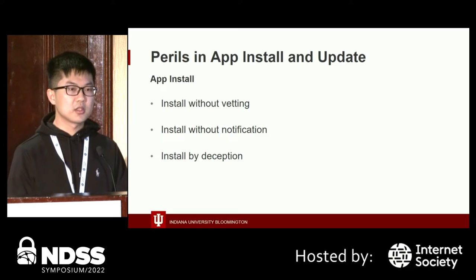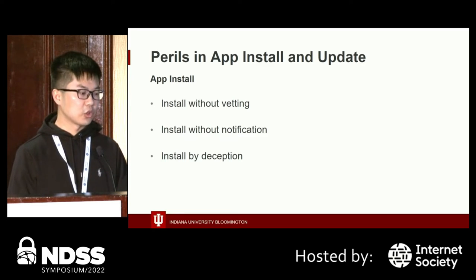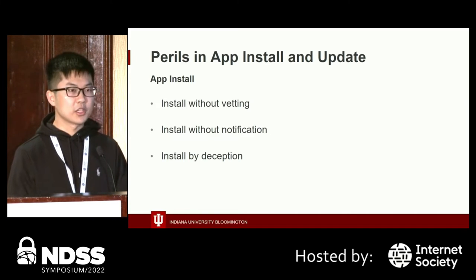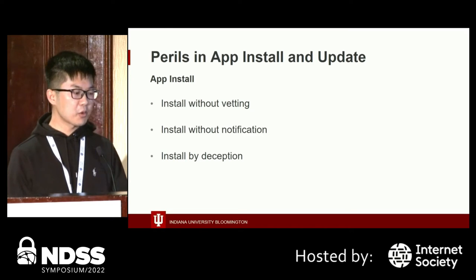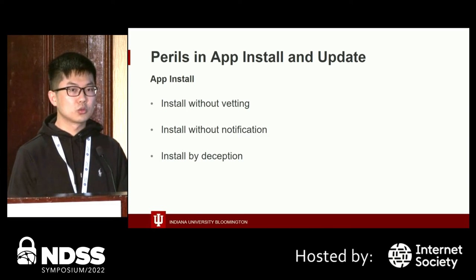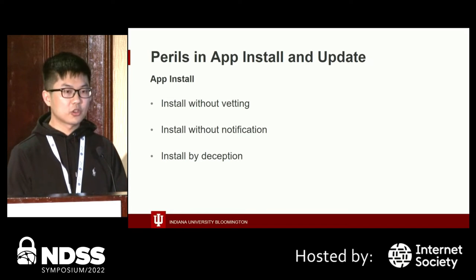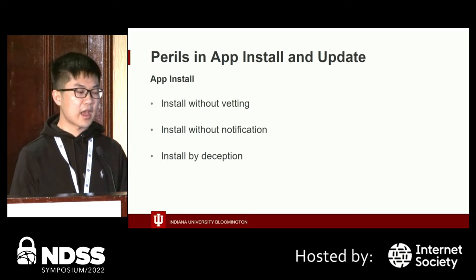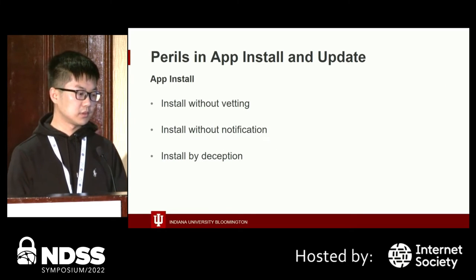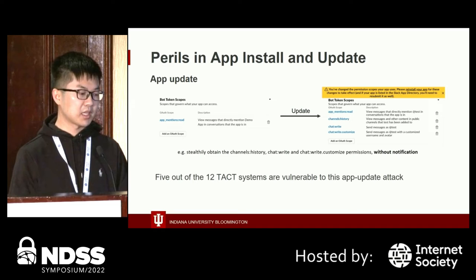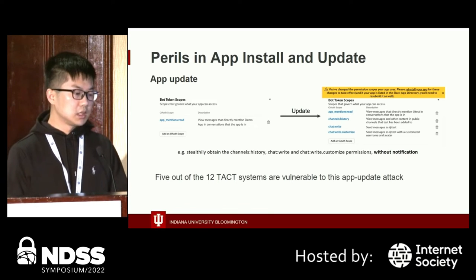Let me introduce the security risks during app installation. We find three kinds of security risks: install without vetting, install without notification, and install by deception. In summary, four team chat systems do not vet at all, five team chat systems allow malicious apps to be installed without notification, and four team chat systems allow a malicious app to use the name and icon of another app. We also find there is no notification during app updates, which opens the door to a new security risk.